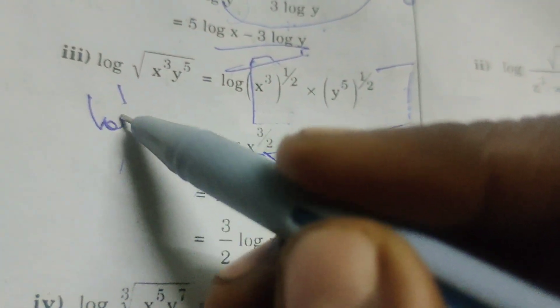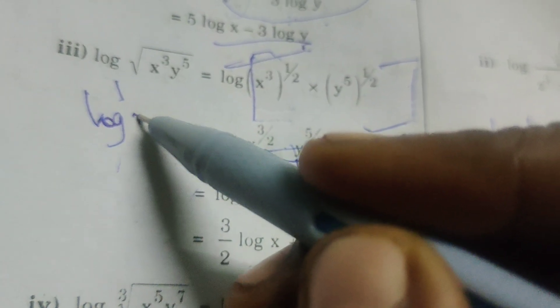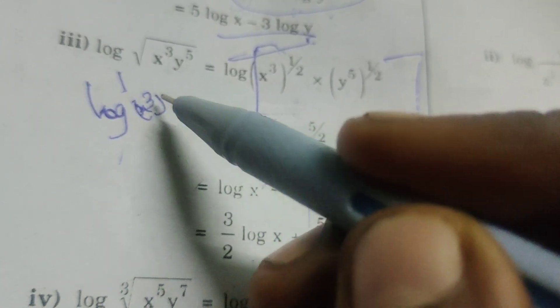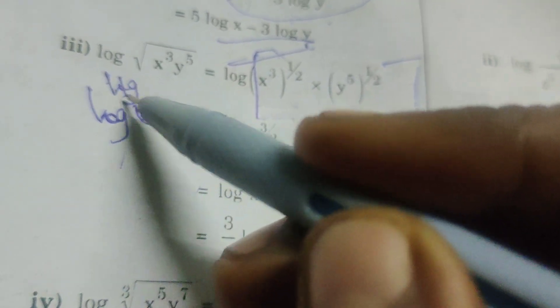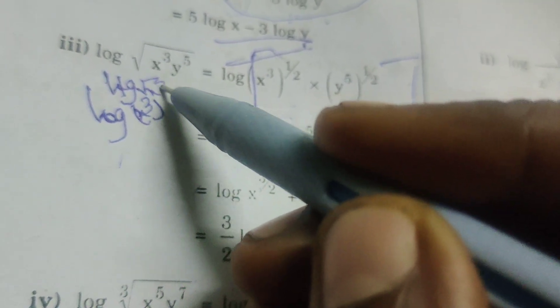Here log x cube whole power 1 by 2. I mean first of all write log root x cube into root y power 5.